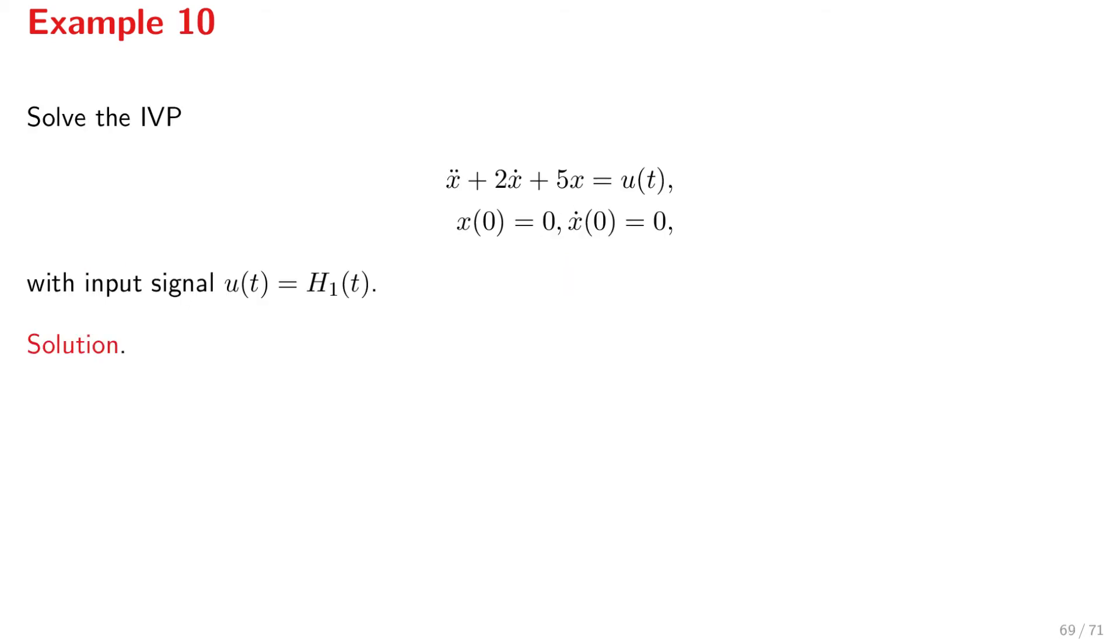Here is another example with a second-order derivative, but absolutely nothing changes. So, have a look here. We have x double dot plus 2x dot plus 5x is equal to u, and x at 0 is 0, x dot at 0 is 0. We need two initial conditions because x appears in the differential equation in the form of x double dot. Let's assume that we want to see what happens if we apply to this system the input signal u of t is equal to h1 of t, so Heaviside function with parameter 1.